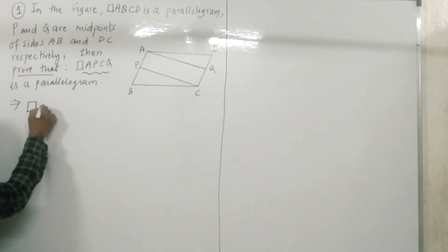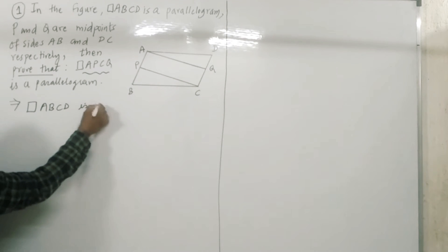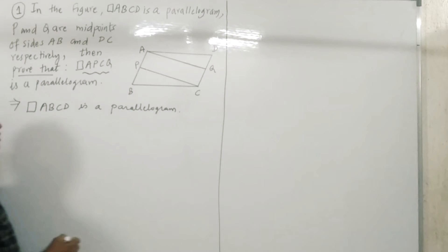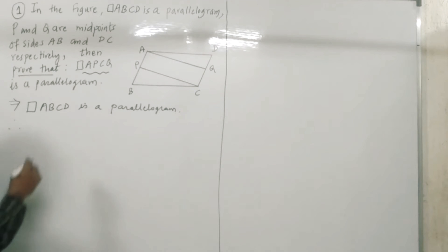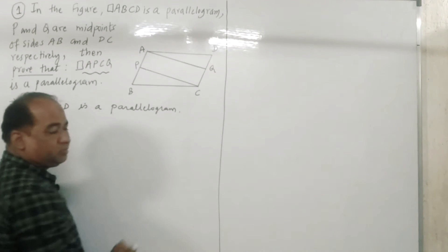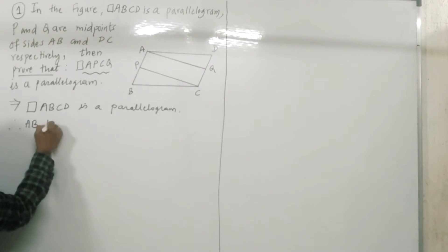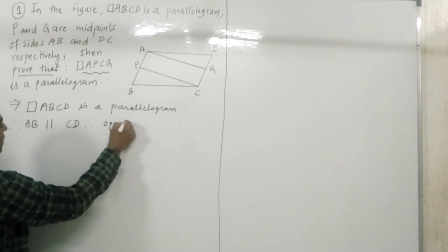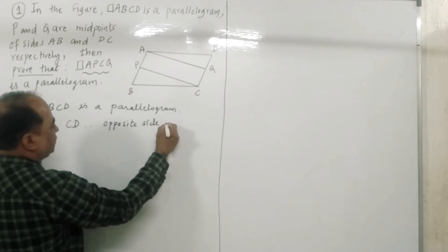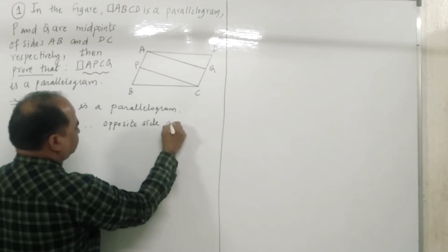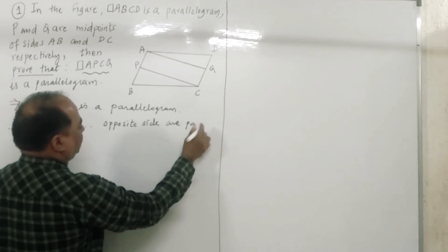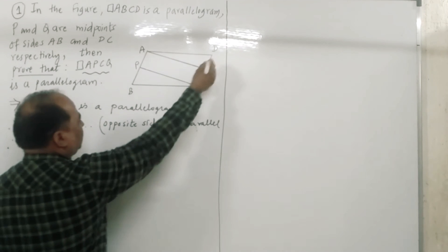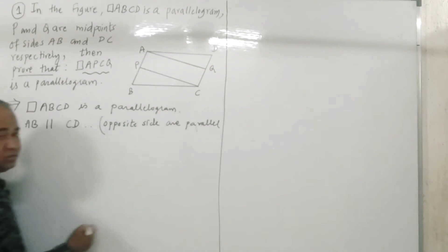It is given that quadrilateral ABCD is a parallelogram. Therefore, opposite sides of the parallelogram are parallel, by definition of parallelogram. So AB is parallel to CD. Therefore, as AB is parallel to CD, AP is also parallel to CQ.